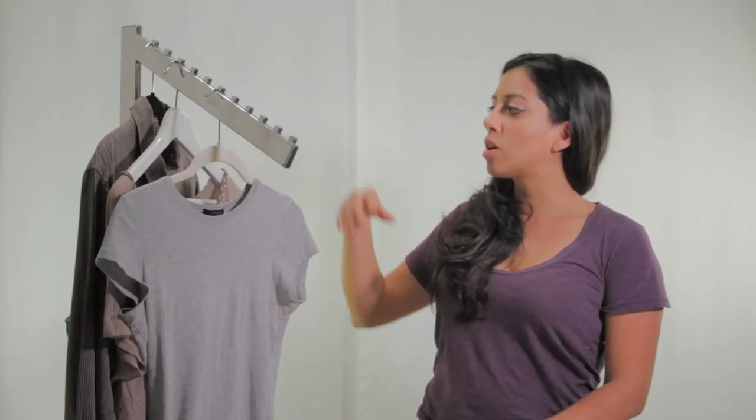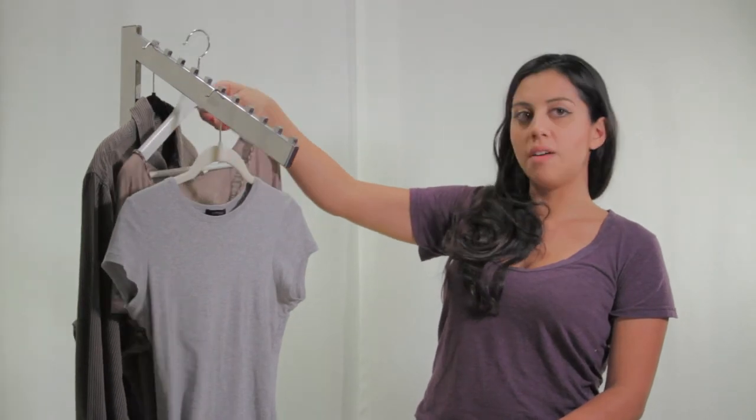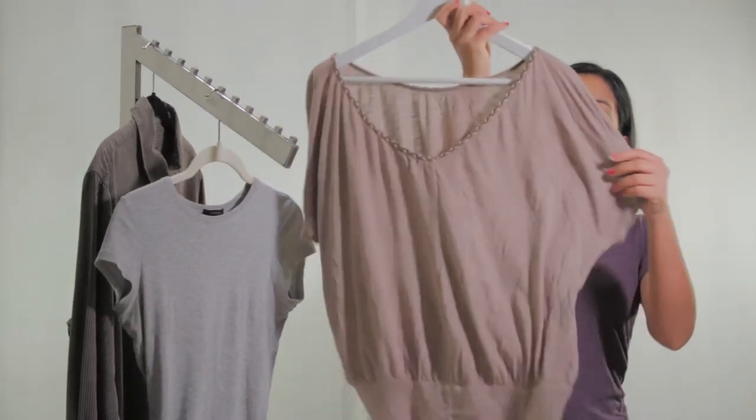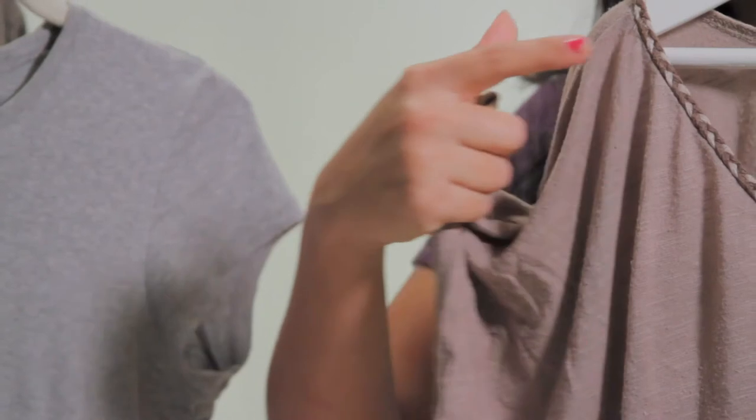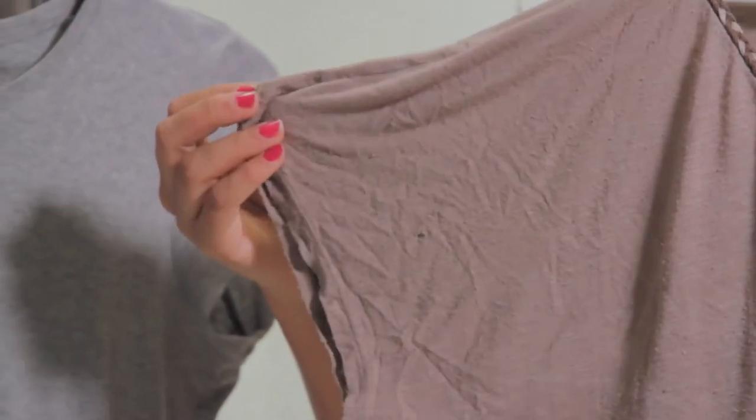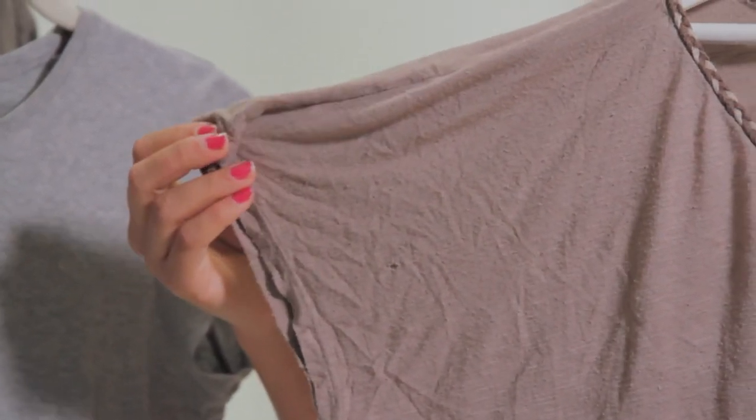So after you've looked at your pattern, this is a typical look of a drop-in sleeve. You'll notice that the body meets the shoulder all the way down through the sleeve. You're not going to notice any seam lines.